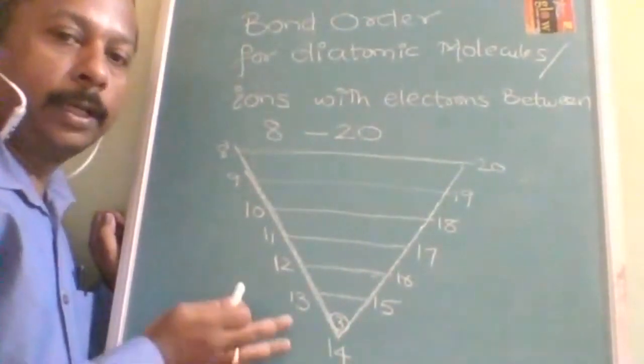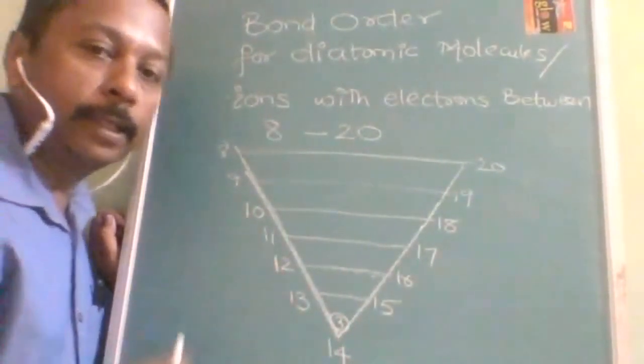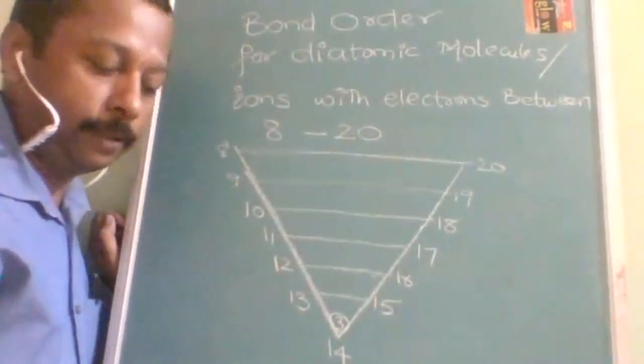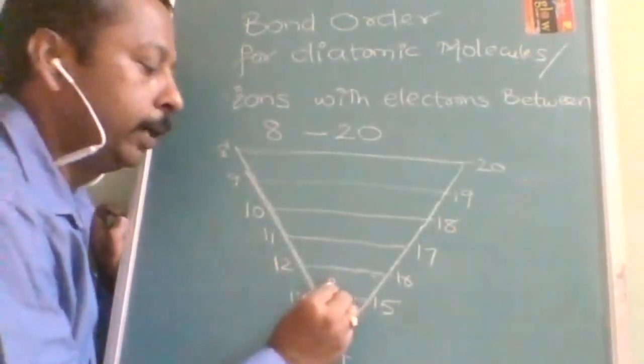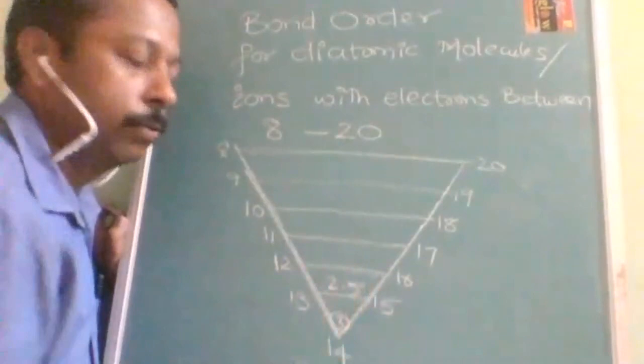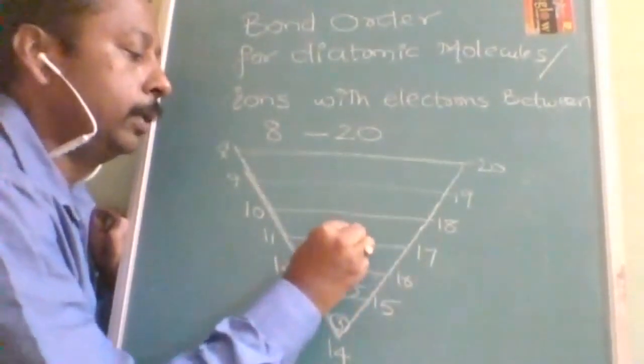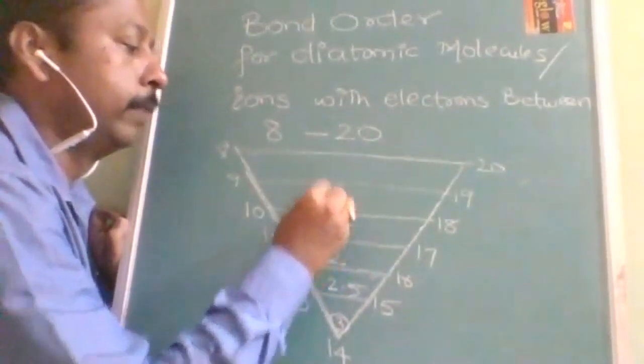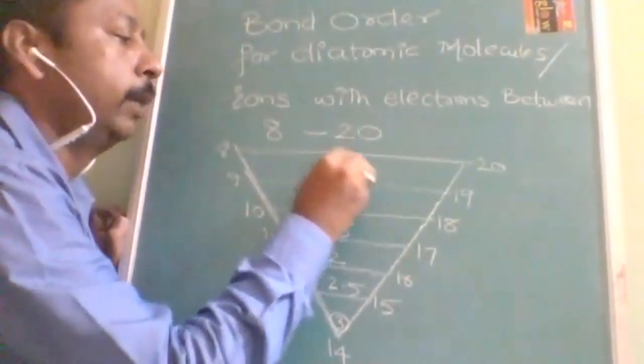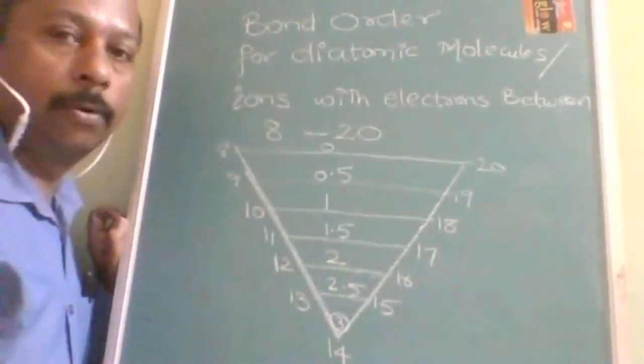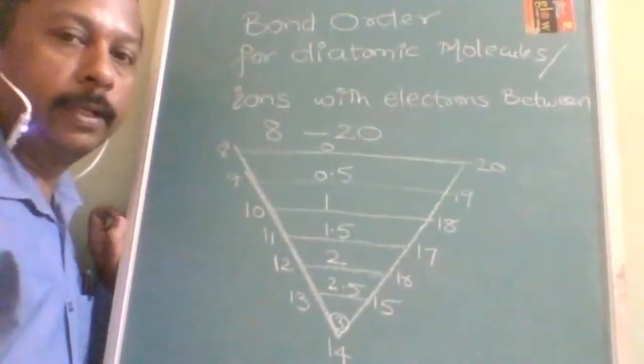14 means it is 3. Now keep on decrementing, keep on writing with the decremental of 0.5. OK, so if I write here 3 minus 0.5, it is 2.5 and here it is 2 and here it is 1.5. Here it is 1 and here it is 0.5 and here it is 0. Is it understood students? Very easy.